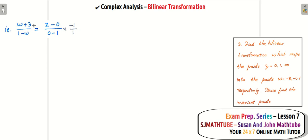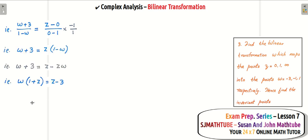Now let's substitute. You just cross multiply — it's simple enough. We got it very fast. If you want, you can input 0 and check whether you are getting minus 3. Input 1: 1 minus 3 is minus 2 — and yeah, the transformation looks correct. Now let's go to the main part: invariant points.